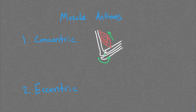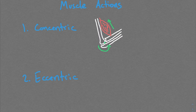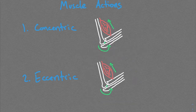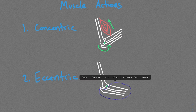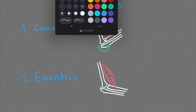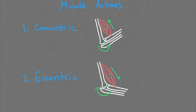Eccentric is the exact opposite. In this case, our muscle is going to be lengthening under tension. So instead of getting all bunched up, it will be elongating as those fibers are stretched. In this case, gravity is actually overcoming the force of the muscle. I drew this arrow pointing roughly downwards not because the muscle is producing force downwards, but rather because gravity is producing a greater force pulling the forearm down than the muscle is pulling back.